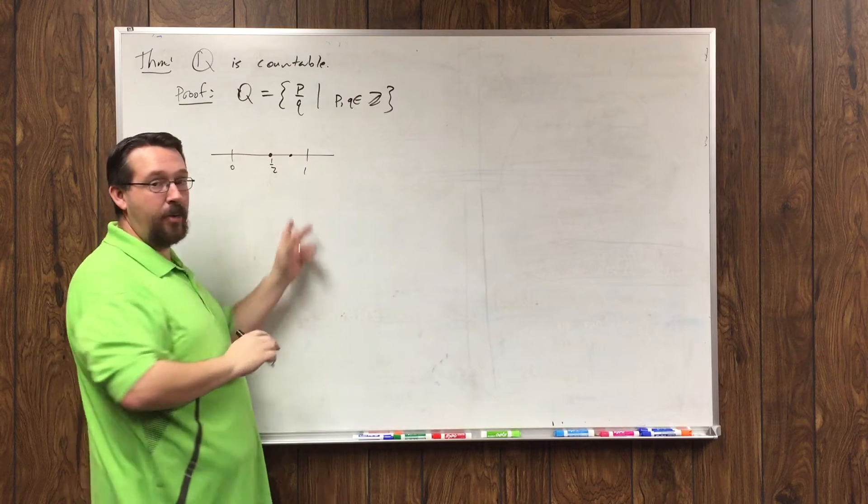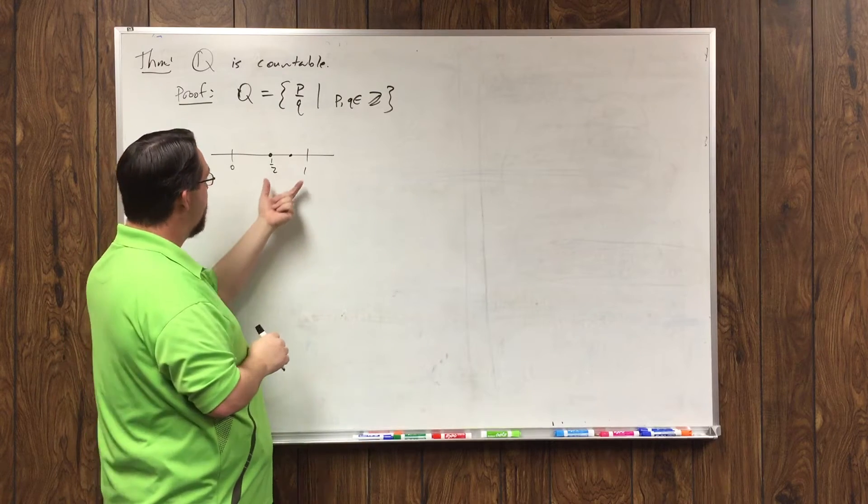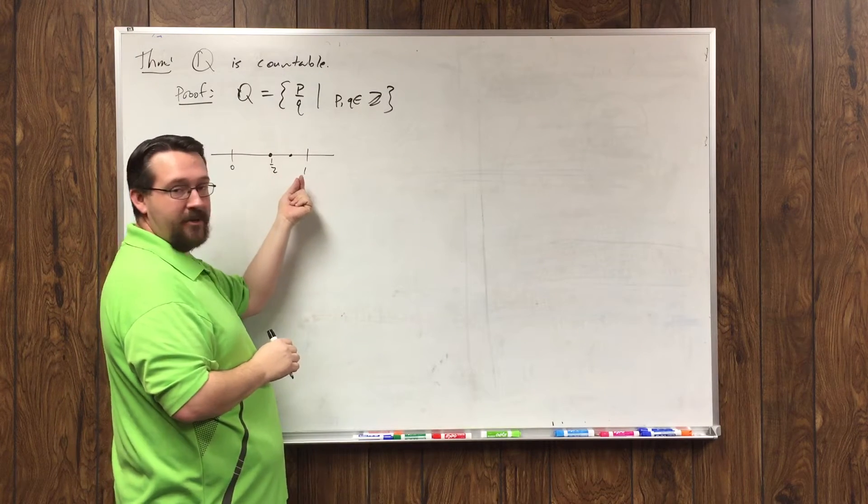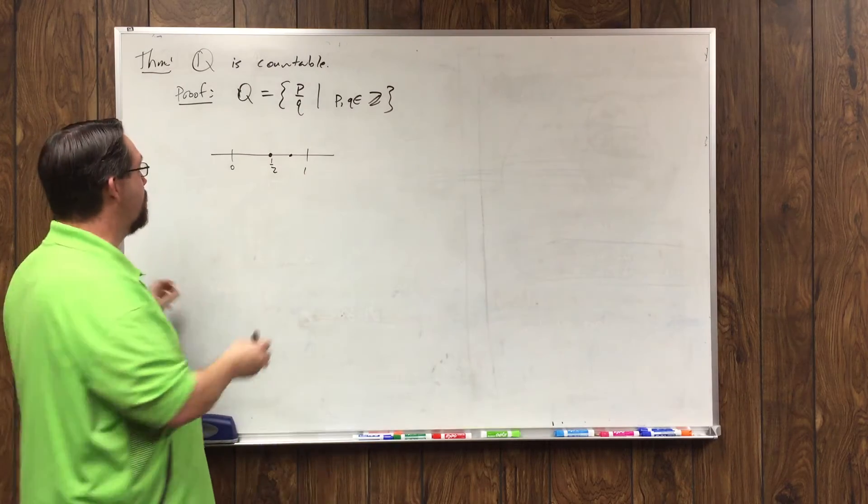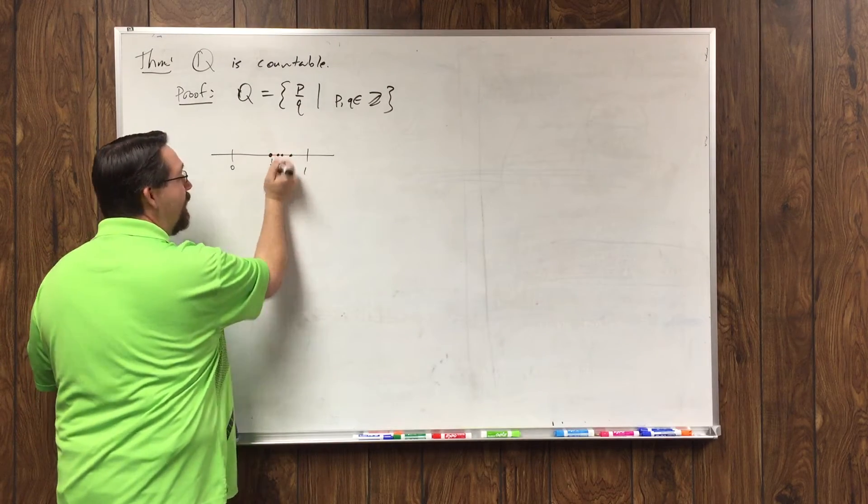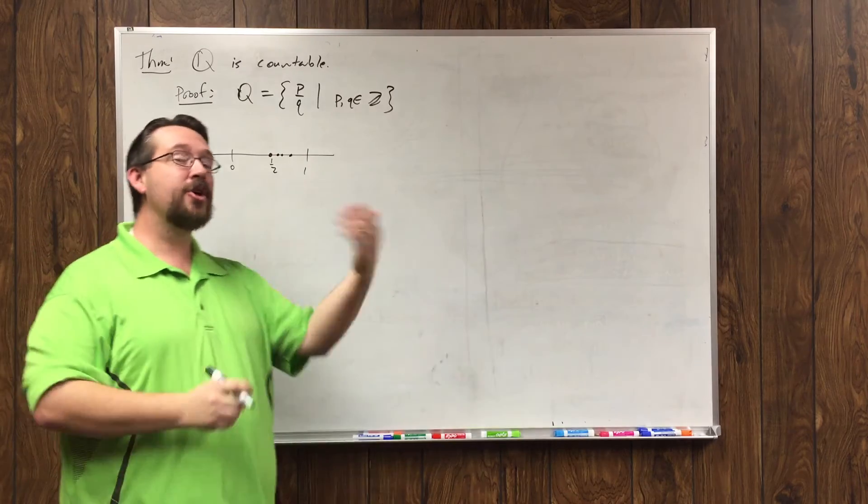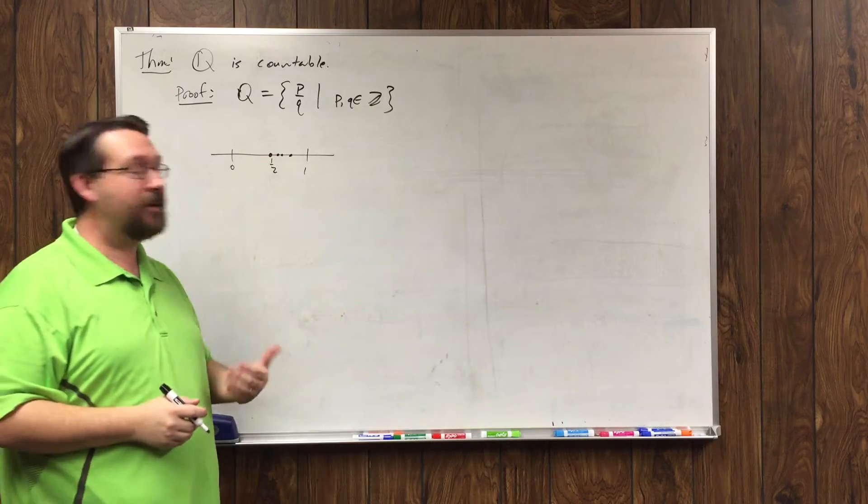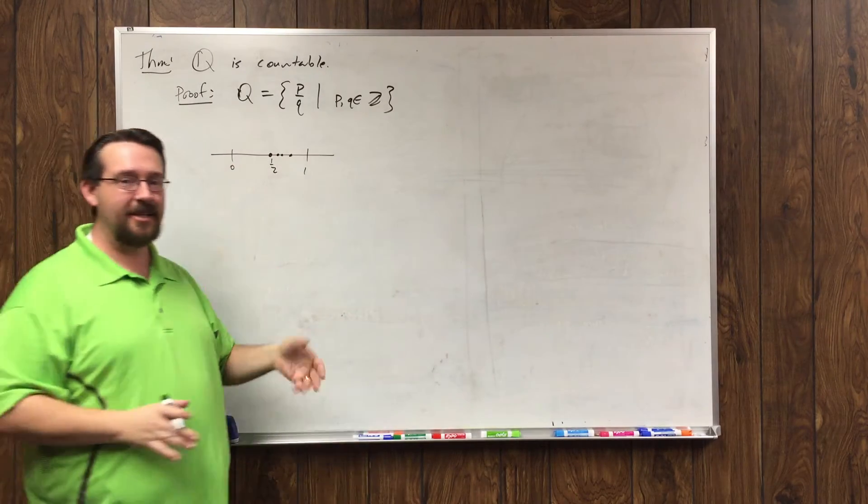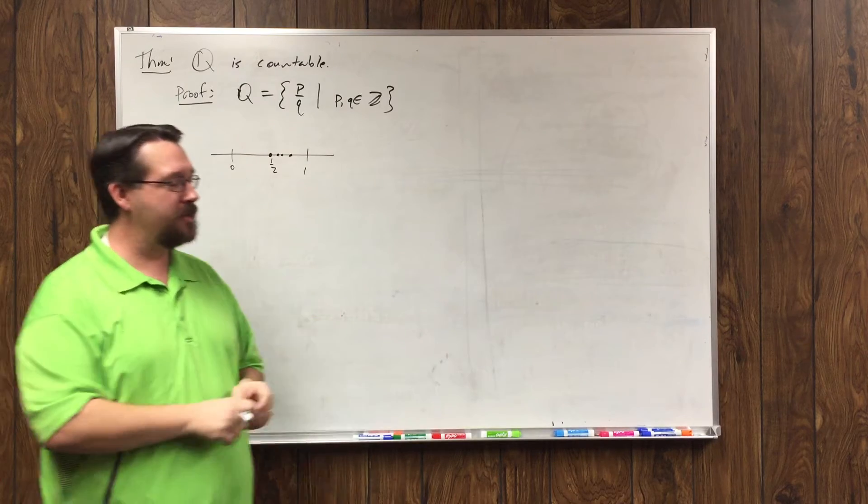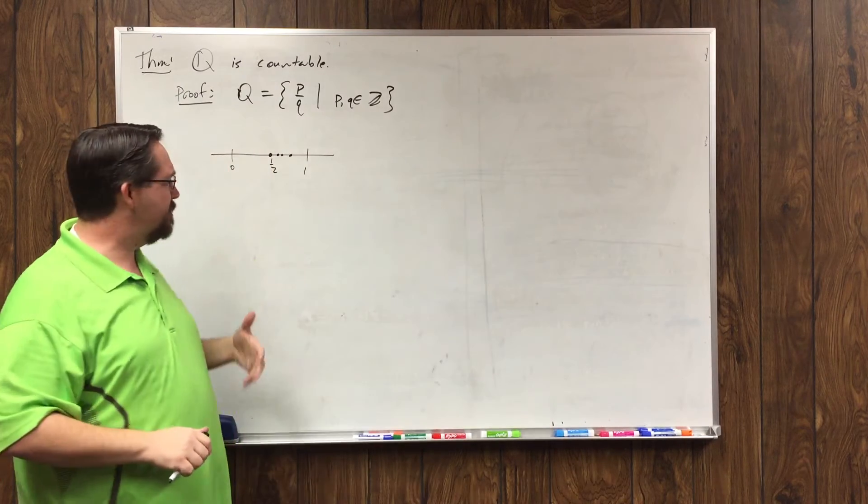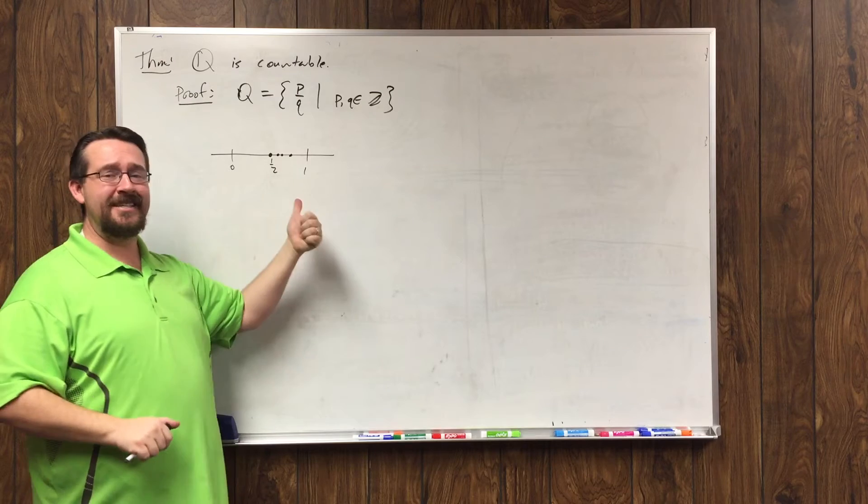All I got to do to figure out what number is in between there is just add these two up and divide by two, which creates another rational number. So no matter how close you get with two points, there's always another rational number in between you. That's a property we'll actually discuss a little bit later on when we start talking about the topology of the reals way near the end of the semester.